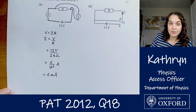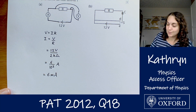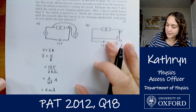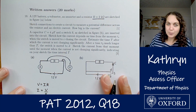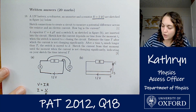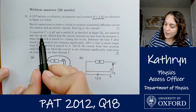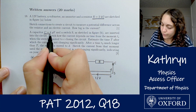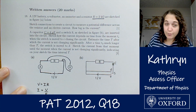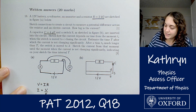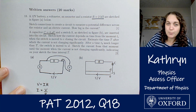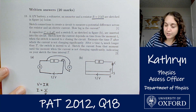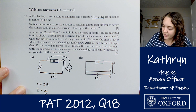That's 6 milliamps, and that's the current through our circuit. The second part is quite long. A capacitor with C equals 4 microfarads and a switch S, sketched in figure B, are inserted into the circuit.